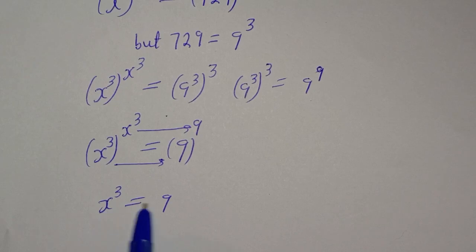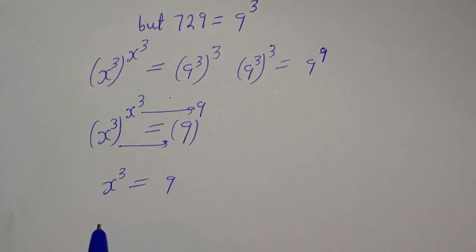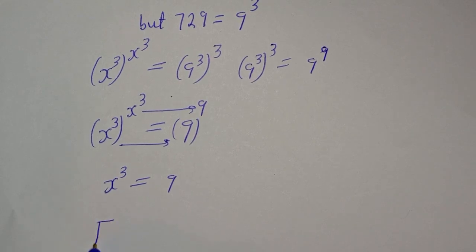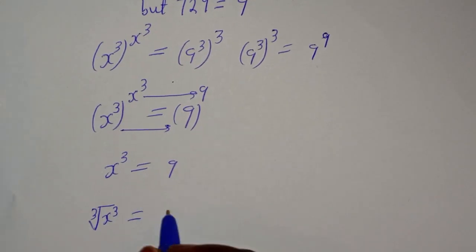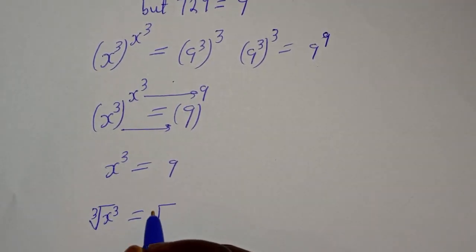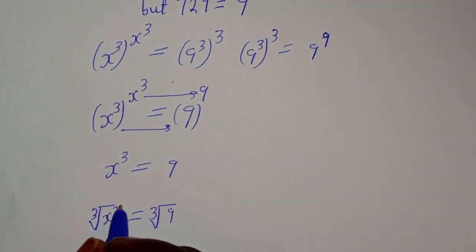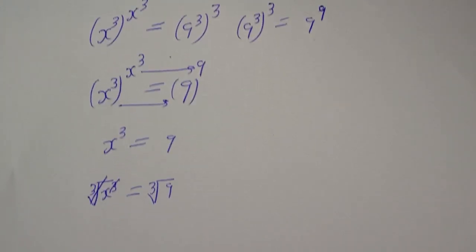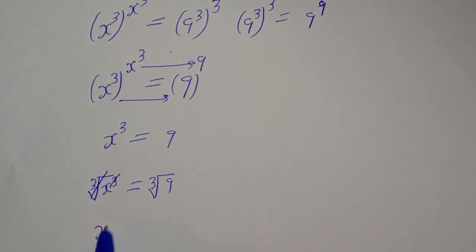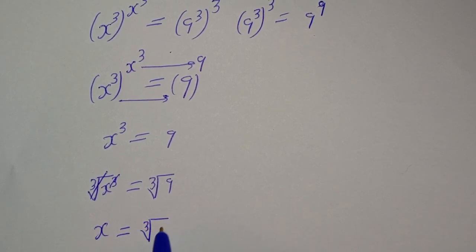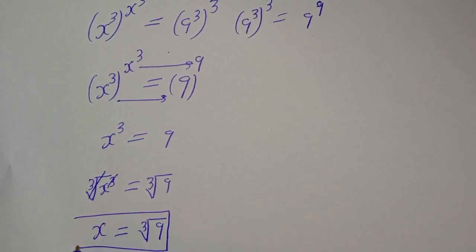But we are asked to find the value of s. Let's take the cube root of both sides. That is, cube root of s raised to power 3 is equal to cube root of 9. The cube root and the power of 3 cancel, giving us s is equal to the cube root of 9. This is the final answer.